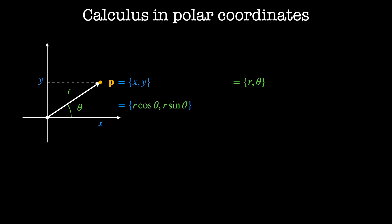P measures a distance r·cosine(theta) units in the x-direction and r·sine(theta) units in the y-direction. In polar coordinates, it is a distance of sqrt(x² + y²) units in the r-direction and arctan(y/x) units in the theta-direction.